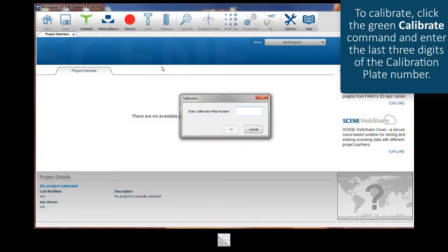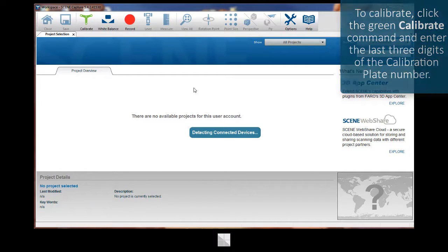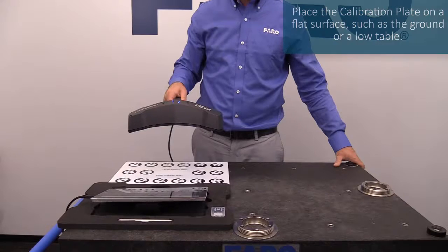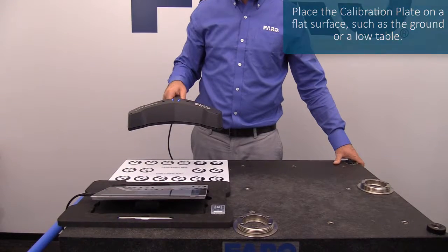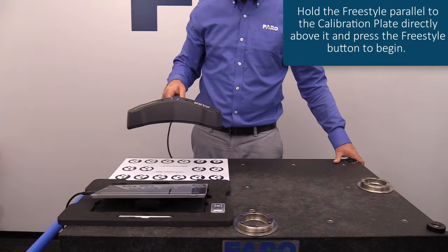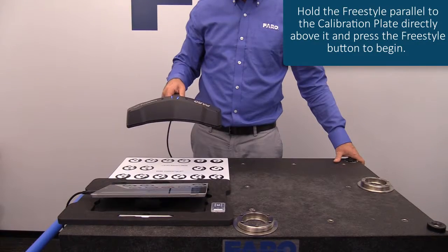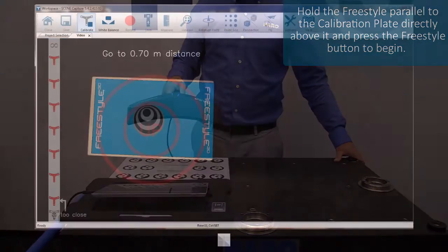To calibrate, click the green Calibrate command and enter the last three digits of the calibration plate number. Place the calibration plate on a flat surface, such as the ground or a low table. Hold the Freestyle parallel to the calibration plate directly above it and press the Freestyle button to begin.